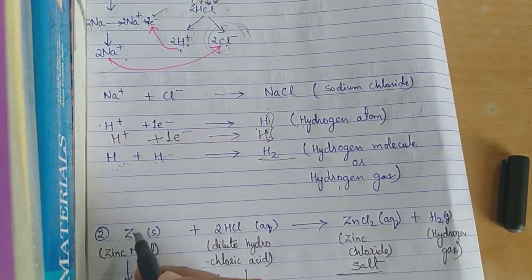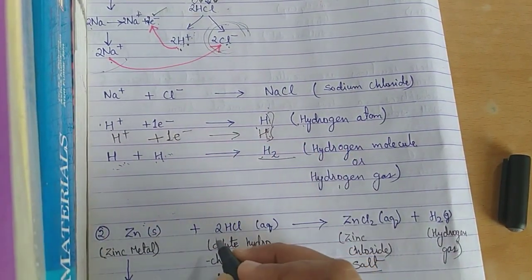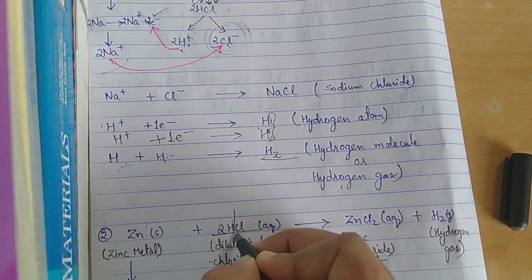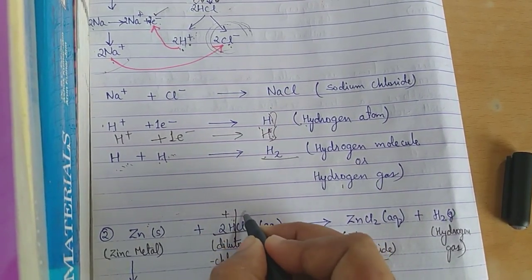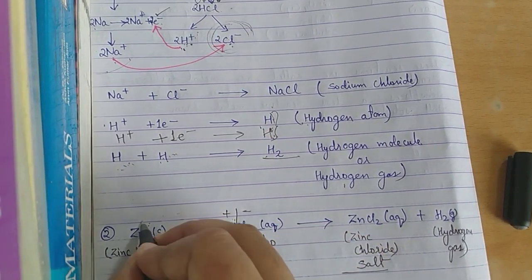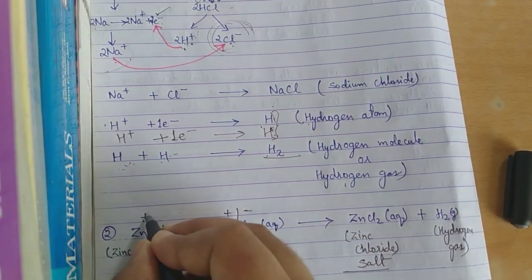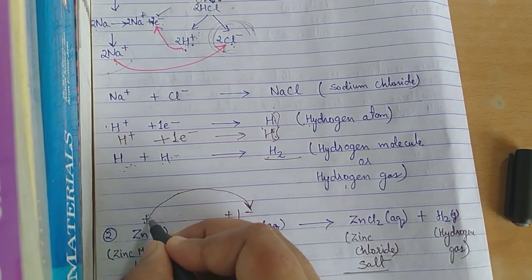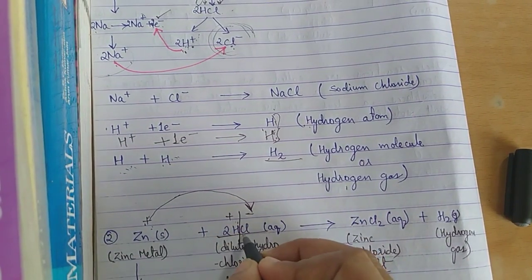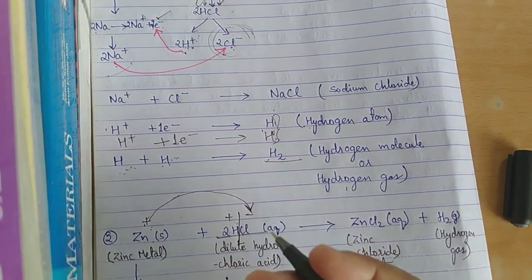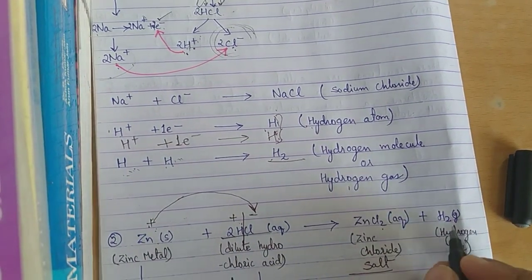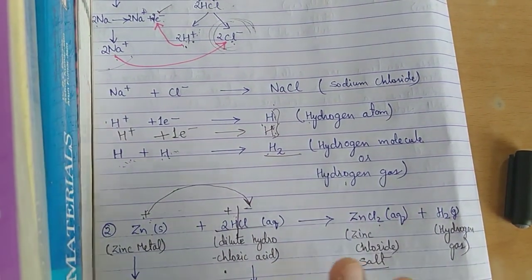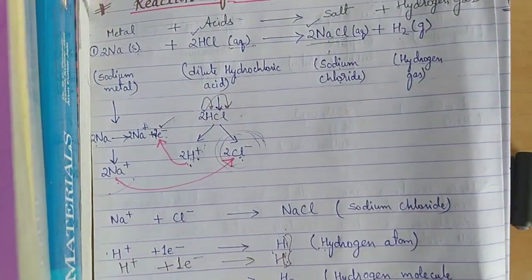Zinc metal is electropositive in nature. HCl donates H⁺, leaving Cl⁻ as the negative side. Since zinc is a metal it is electropositive, so it forms a bond with the negative Cl⁻. The H⁺ ions then form hydrogen gas. This is how ZnCl₂ is formed and H₂ is released.